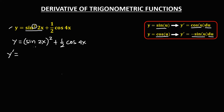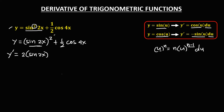To find the derivative, for the first term we're going to use the chain rule: u to the power n gives n times u to the power n minus 1, times the derivative of u. Here n equals 2, u is sine 2x, so the exponent becomes 1. The derivative of sine 2x gives cosine 2x, times the derivative of 2x, which is 2.